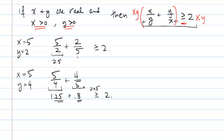So when I multiply xy times x over y, the two y's cancel, and I get x squared. When I multiply xy times y over x, this time the x's cancel, and I get y squared. And the quantity I have on the right-hand side is 2xy.